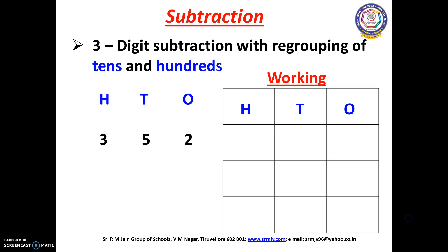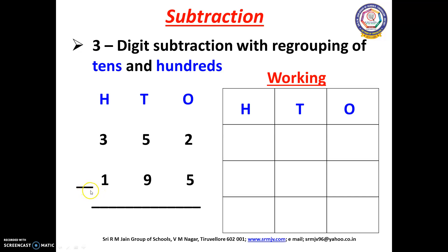This is the sum we are going to work out today. Before we start doing the sum we have to check the symbol. Here we have the subtraction symbol. So we are going to subtract 195 from 352.